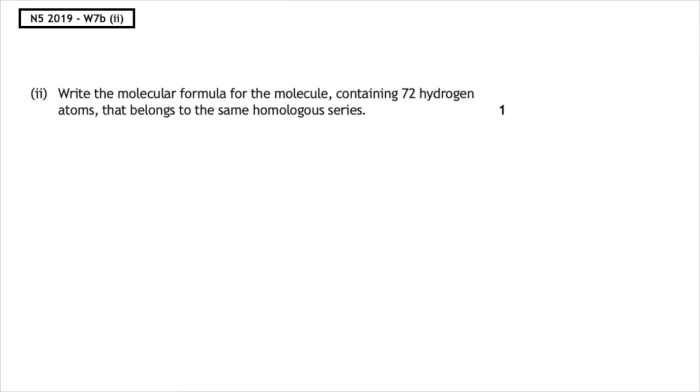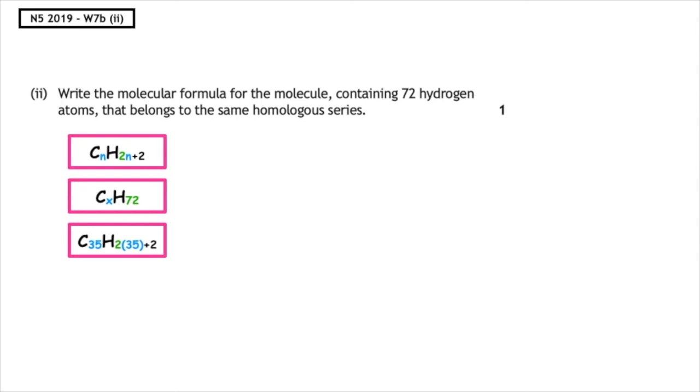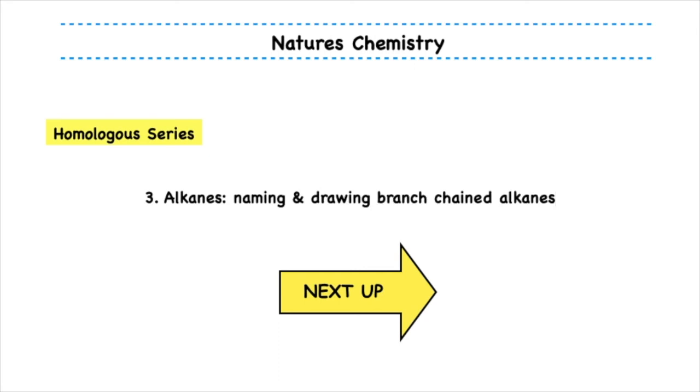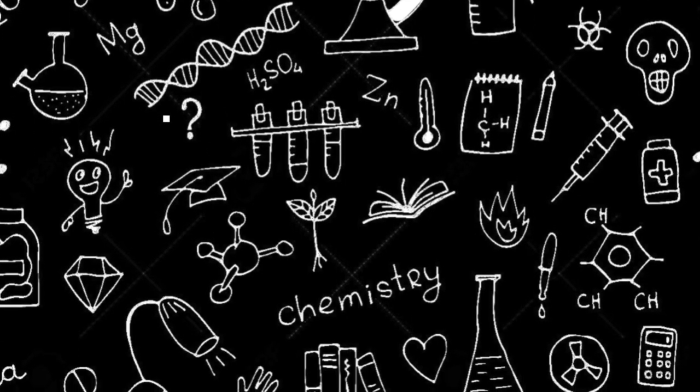Part 2 to this question wants you to write the molecular formula for the molecule containing 72 hydrogen atoms that belongs to the same homologous series. This is quite a tricky question. Now if we know that the general formula is CnH2n plus 2, if I take away 2 from the 72 hydrogen atoms, that would give me 70. And 70 divided by 2 gives me 35. Which means that the molecular formula this time is going to be C35H72.